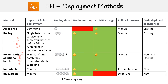The last in-place method is immutable. The idea is you replicate your entire environment — so instead of taking four servers out of service, it creates four brand new servers. Once they're all healthy, you switch over to them. If you need to roll back, you simply point back to the old servers, because they still exist and haven't been deleted yet. Immutable gives you the best flexibility for rollback.